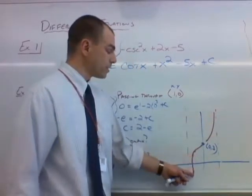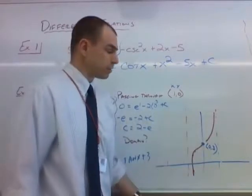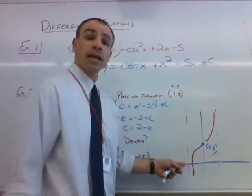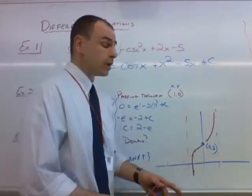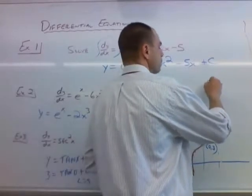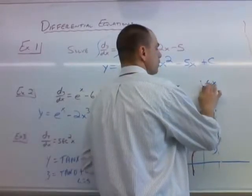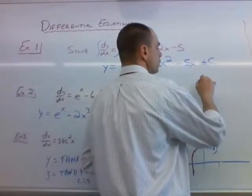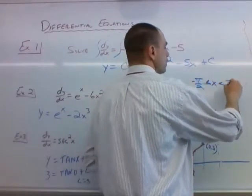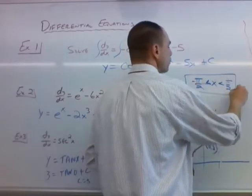Okay? So we want the domain of our function based off of this information. Well, tangent, again, is undefined at negative pi over 2 and pi over 2. In between, it's fine. So our domain is that x is between, oops, not including, sorry. So just x is greater than negative pi over 2 and less than pi over 2. That would be our domain.